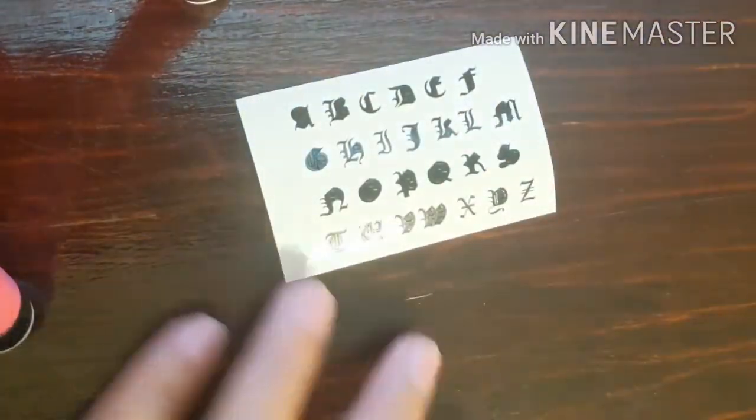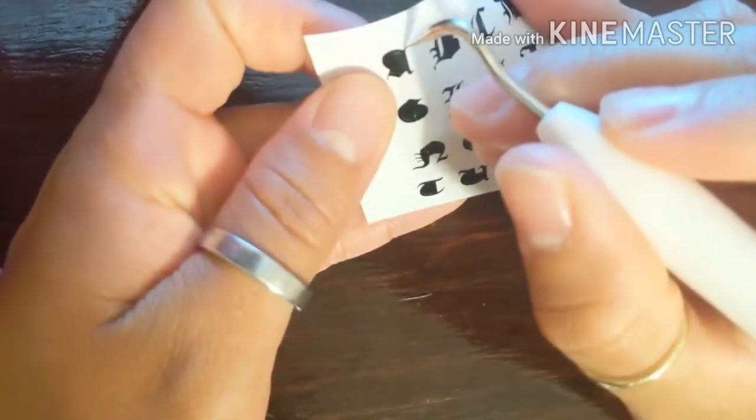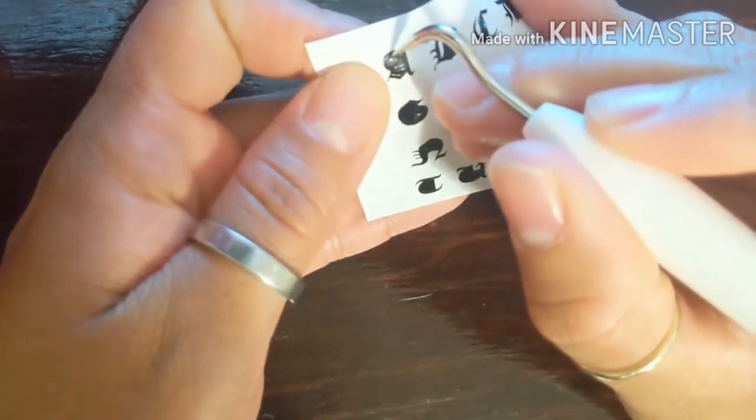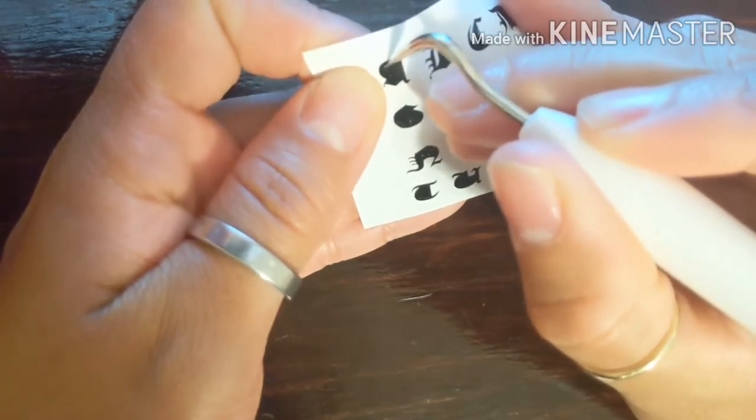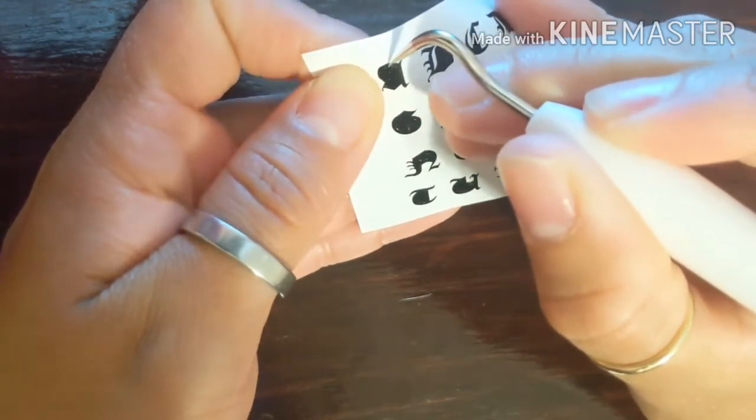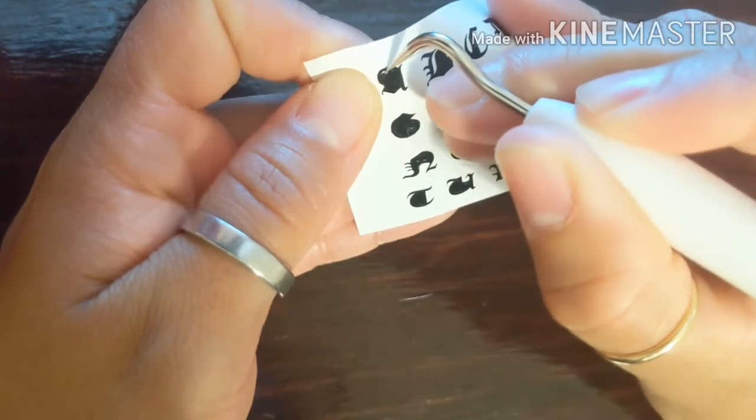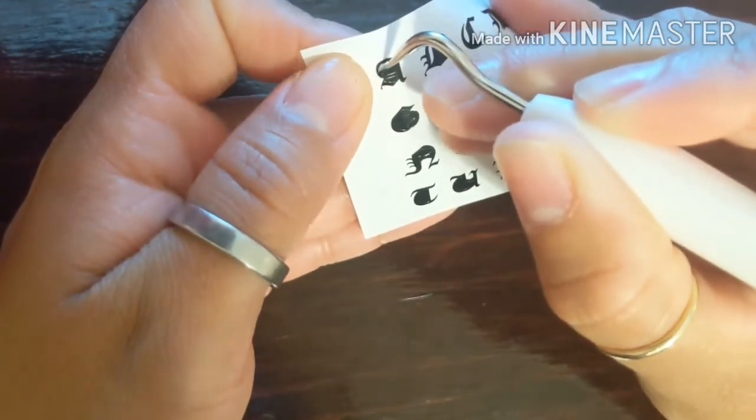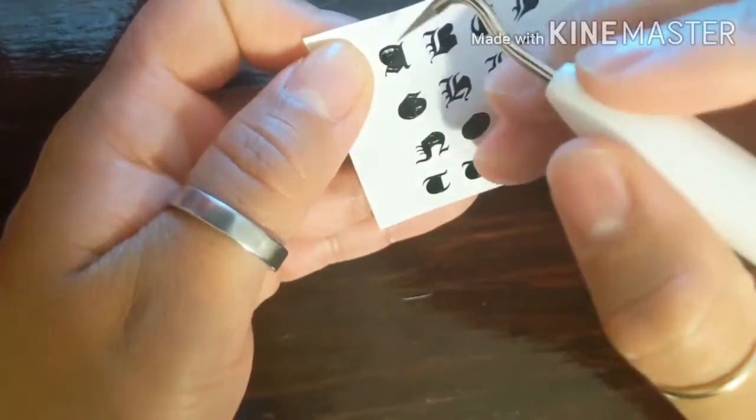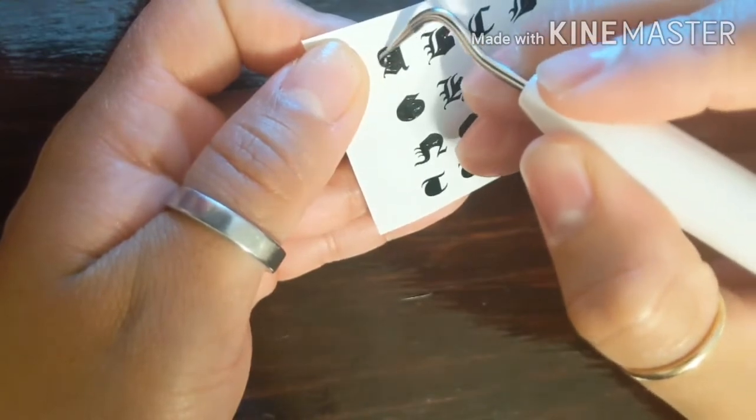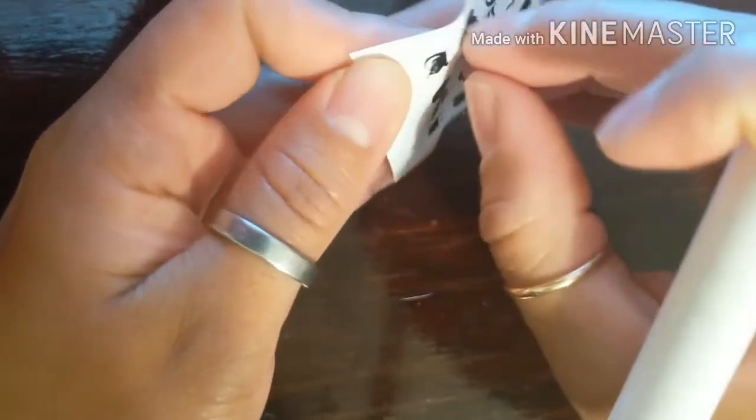Now we do have to weed it because obviously you can see there is stuff that we don't need. Now, I don't know how to weed it. So you guys are going to do it with me. I don't know how to weed it. So there is one piece.